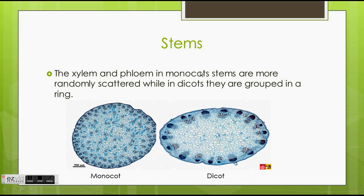Stems: the xylem and phloem in monocot stems are more randomly scattered, while in dicots, they are grouped in a ring. On the left of the monocot, we see that the xylem and the phloem aren't near each other — they're more spread out, and there's no real structure to it. On the right, we see that the dicot has the xylem and the phloem grouped together, and they form this ring structure that goes around the edge of the stem.